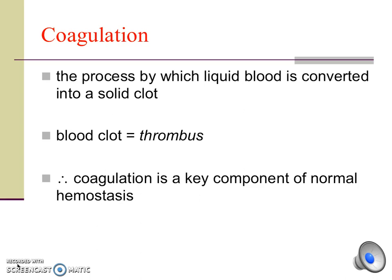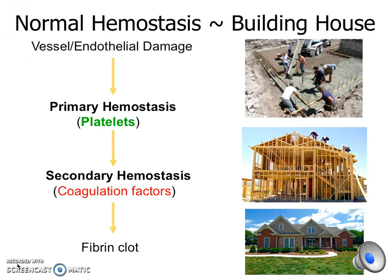A blood clot is also known as a thrombus. A very practical way to think about normal hemostasis is to compare it to the process of building a house. To build a house, the hole in the ground must first be filled in by a solid concrete foundation. After that, the house can be built properly on top. Normal hemostasis aims to repair the injured blood vessel to stop bleeding. In essence, there is a hole or defect in the blood vessel that must also be sealed, so hemostasis is very comparable to the process of house construction. The hole in the blood vessel needs to be filled with a solid and stable foundation so that the blood clot can be built properly on top.